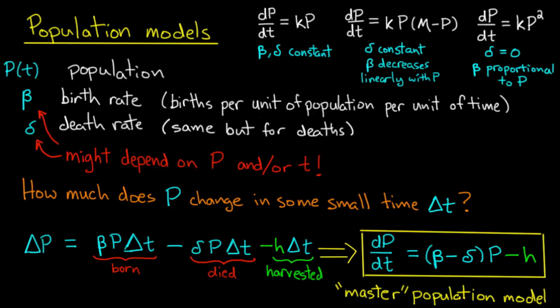So this is the master population model with this little bonus term of harvesting, to describe a constant draw on the population, such as fishing.